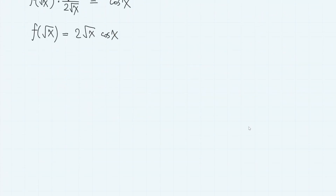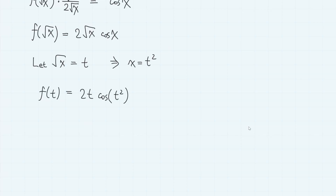Therefore we have f(√x) equals 2√x · cos(x). From here, finding f(t) is easy. Let √x = t, then x = t², so we have f(t) = 2t · cos(t²).